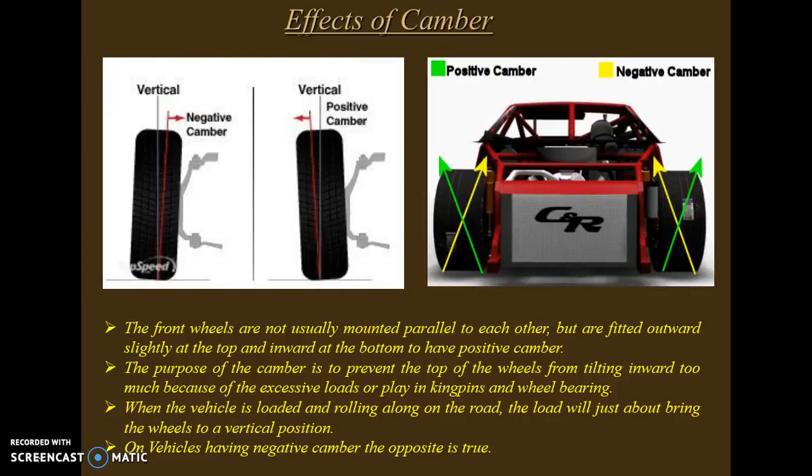The front wheels are not usually mounted parallel to each other but are fitted outward slightly at the top and inward at the bottom to give positive camber. The purpose of camber is to prevent the top of the wheels from tilting inward too much due to excessive loads or play in kingpins and wheel bearings.